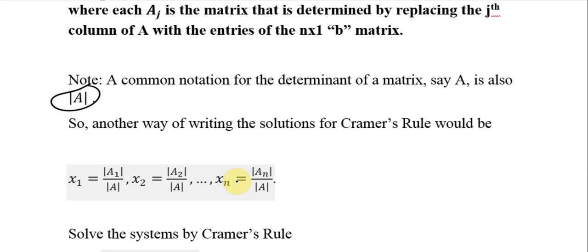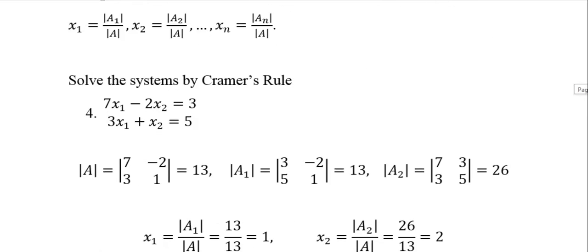So what Cramer's Rule simply says is that you can find the solution without using row reduced echelon form. You can find the solution by using the determinants. Previously, you were able to use the adjoint theorem to find the inverse without using row reduction on the matrix. So another neat application of the determinant.